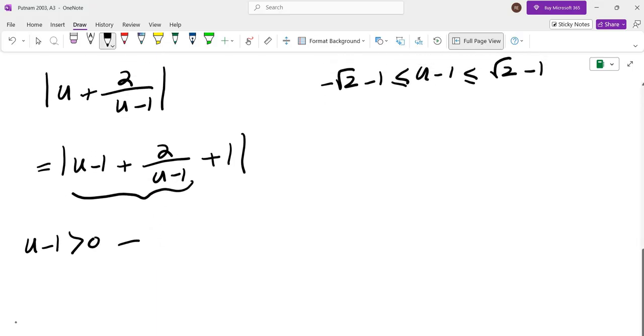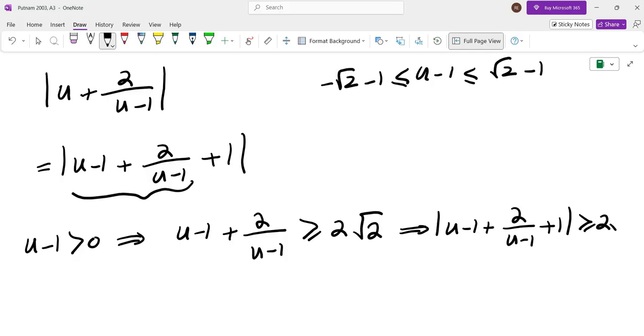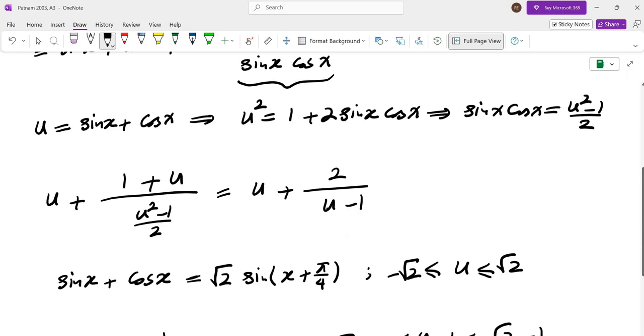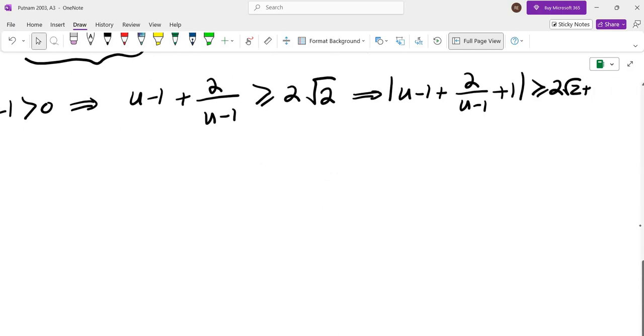Either u minus one is positive. In that case, u minus one plus two over u minus one by AM-GM is greater than or equal to two root two. And if I add one, the expression u minus one plus two over u minus one plus one is going to be greater than or equal to two root two plus one. So that's the first case.